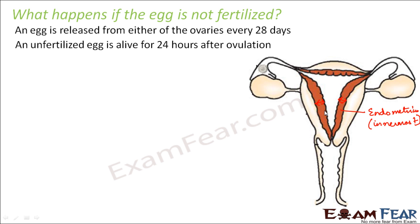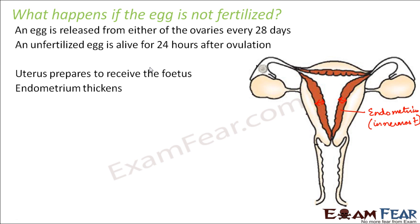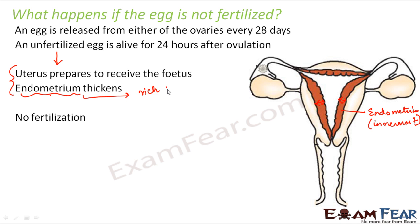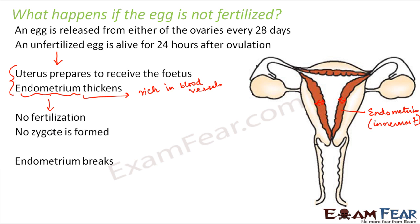So what will the uterus do with the thickened endometrial lining? It doesn't need it. The thickened endometrium will break when there is no fertilization. The unfertilized egg waits for 24 hours for the sperm, meanwhile the uterus prepares to receive the fetus by thickening its endometrial lining. Since no fertilization has taken place, no embryo is coming to the uterus, so the endometrium breaks.